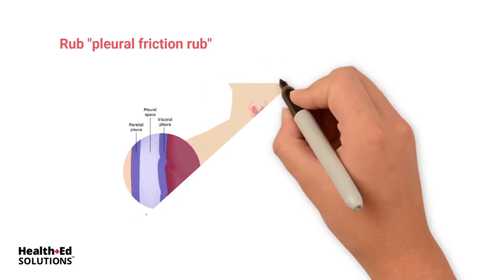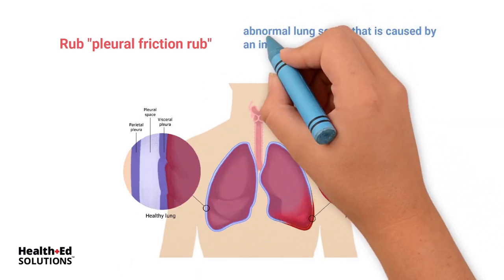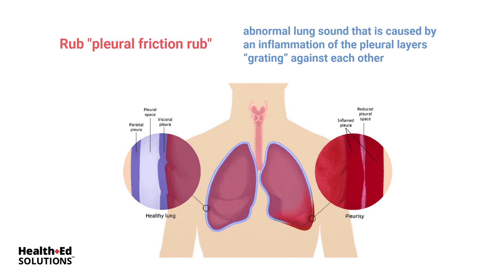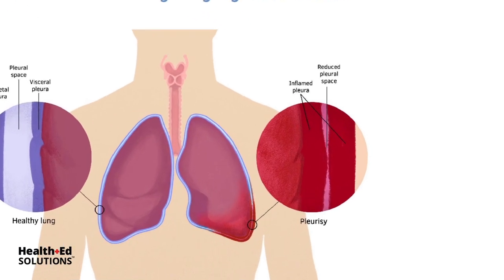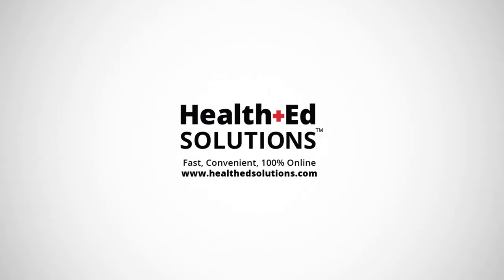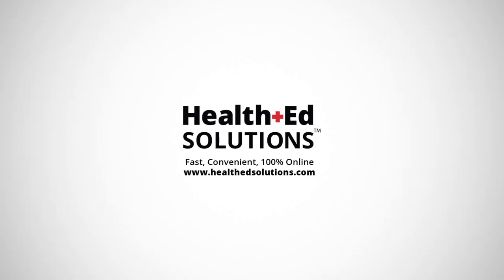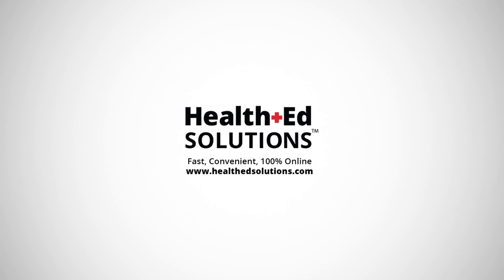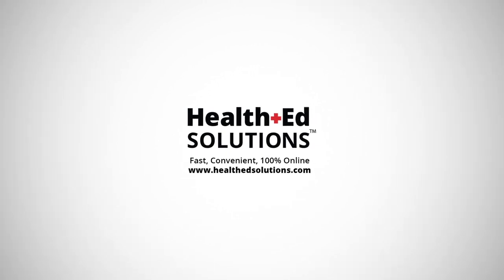Finally, a pleural friction rub is an indicator of an inflammatory process — usually an infection. It's like a grating of the pleural surfaces against each other, rubbing together. Pleural friction rub is an indicator of probably pleurisy, because those lung surfaces are grating against each other and creating a grating sound. That's it for today's lesson. Thanks for watching and remember to check out healthedsolutions.com for more free content or to get certified or recertified online.